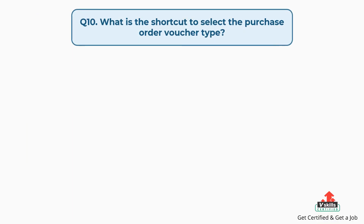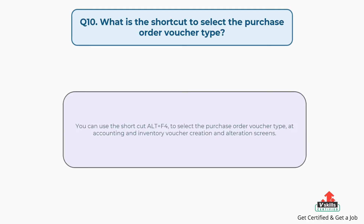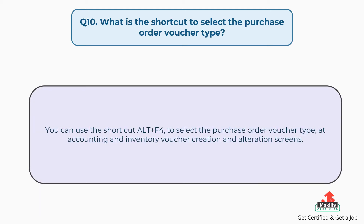Question number ten: what is the shortcut to select the purchase order voucher type? You can use the shortcut ALT plus F4 to select the purchase order voucher type at accounting and inventory voucher creation and alteration screens.